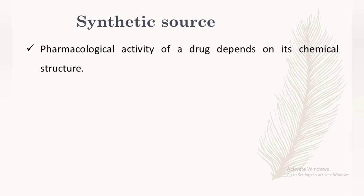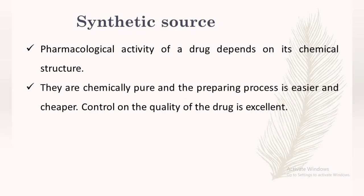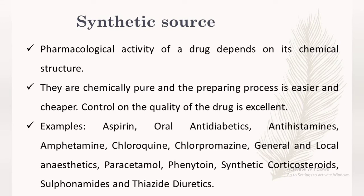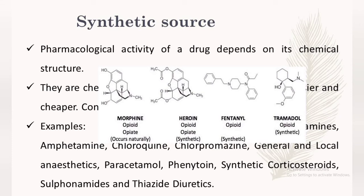In synthetic source, the pharmacological activity of a drug depends on its chemical structure. At present, the majority of drugs used in clinical practice are prepared synthetically, such as aspirin, oral diabetic agents, antihistaminics, amphetamine, chloroquine, and chlorpromazine. They are chemically pure, and the preparation process is easier, cheaper, and allows excellent quality control. For example, heroin, fentanyl, and tramadol are synthetically synthesized in the laboratory with pure structure, as opposed to morphine which is obtained from nature.